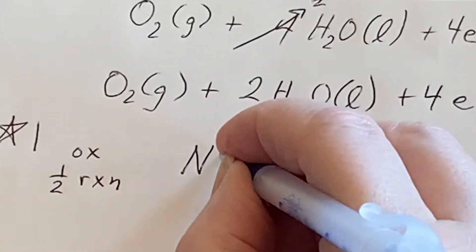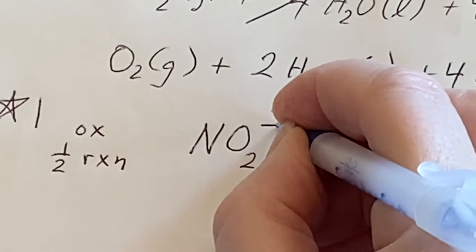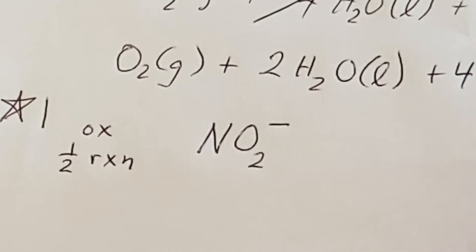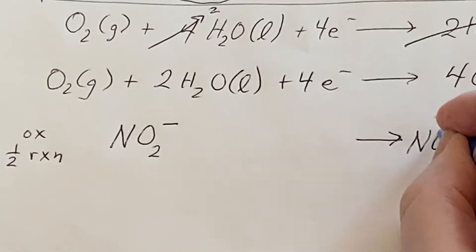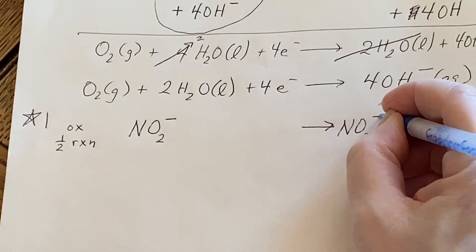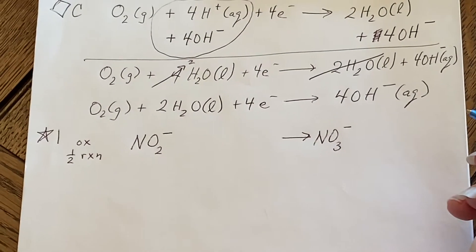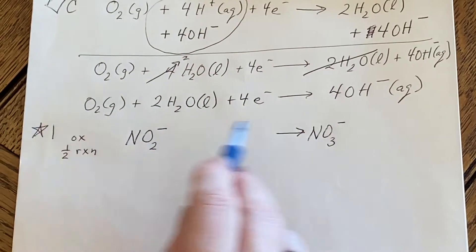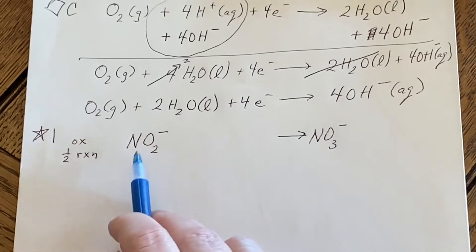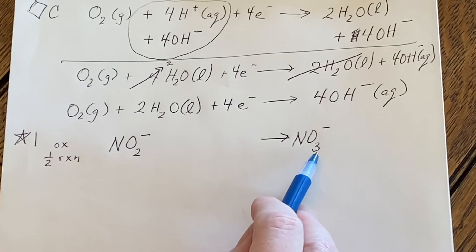I'm going to start with the nitrite ion NO2- and I want to end up with the nitrate ion NO3-. I can see that I have a single N on both sides, but I don't have the right number of O's.